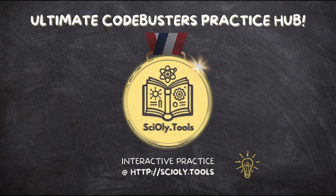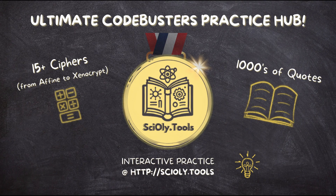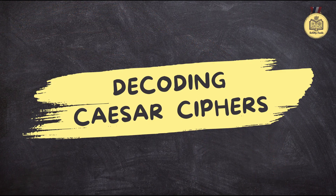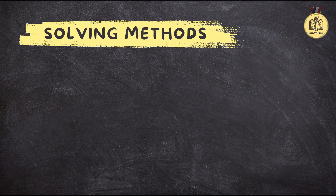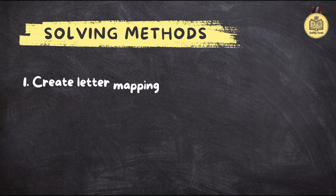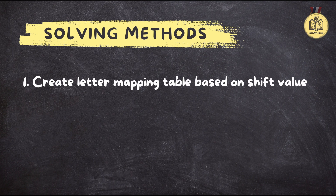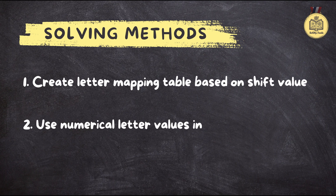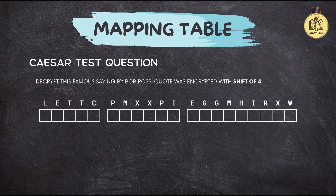Today we're taking a deep dive into one of the oldest encryption techniques, the Caesar cipher. The Caesar cipher was actually used effectively for a long time — it's kind of amazing how something so simple can still be so powerful. Consider this your code-breaking crash course. We'll be learning two methods: the visual mapping table, and for those who like a little math, a formula method. Let's start with the mapping table, the visual approach.